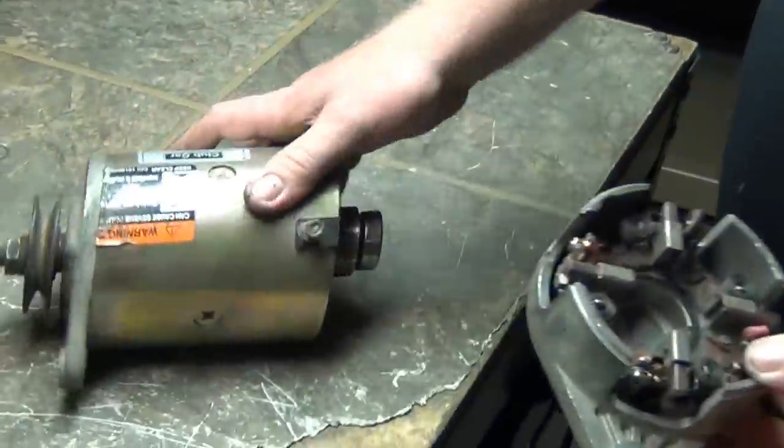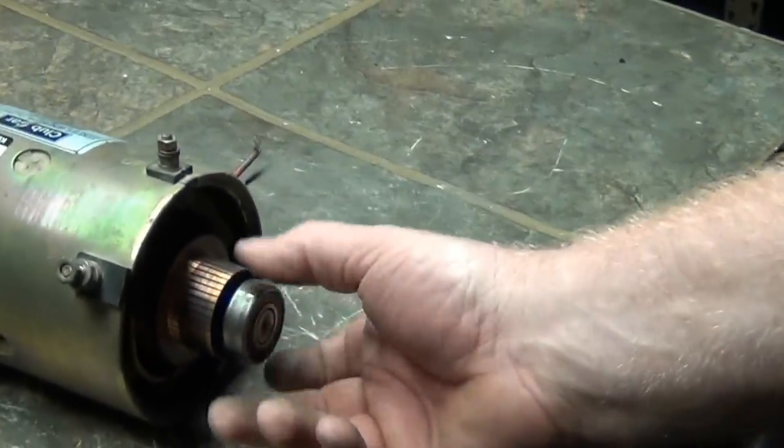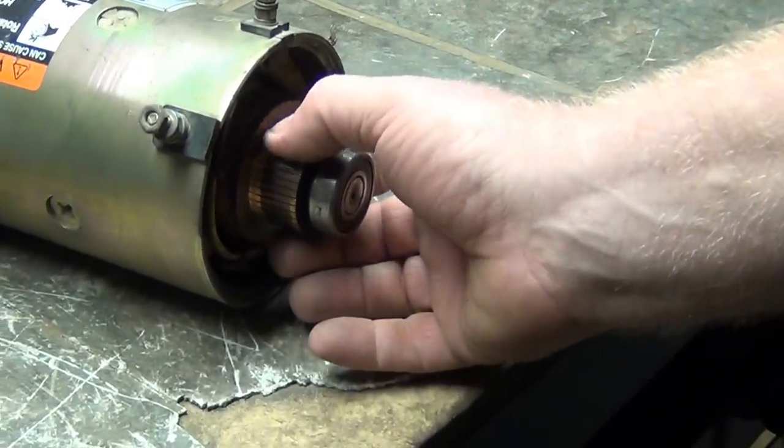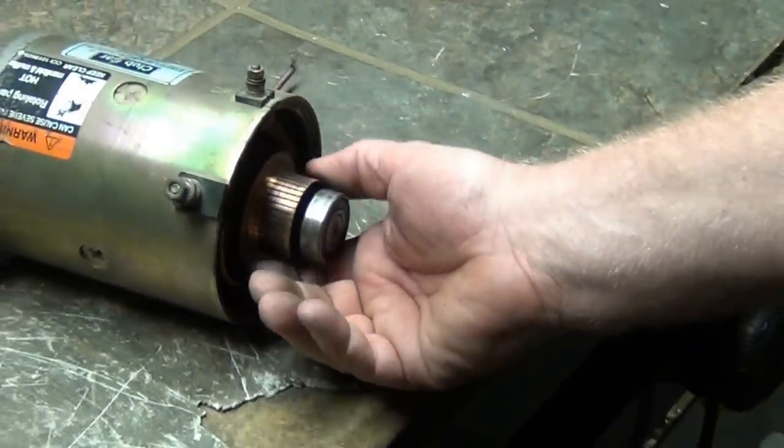One of the things you want to check also, check this bearing. And the other thing you're going to do is you're going to sand your armature off. This is not too bad, but you still need to sand it off.